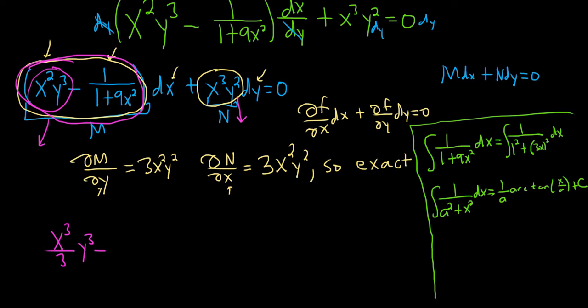And then we make a u substitution. So we'll let u equal 3x. So that means that du is equal to 3 dx, and then you see there's no 3 in the integral up here. So we divide by 3. So this implies that 1/3 du is equal to dx.